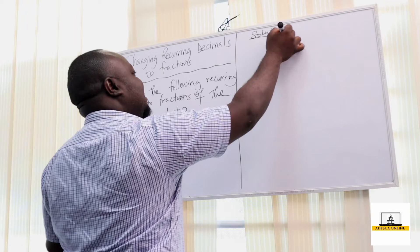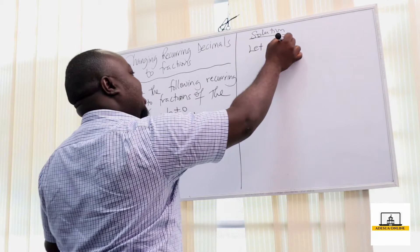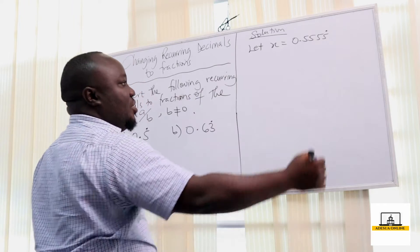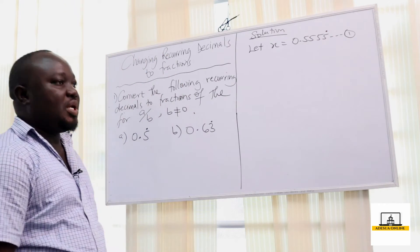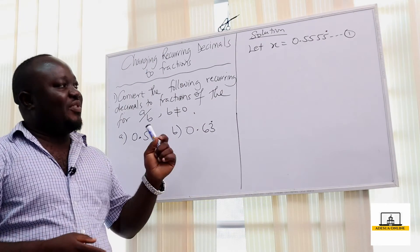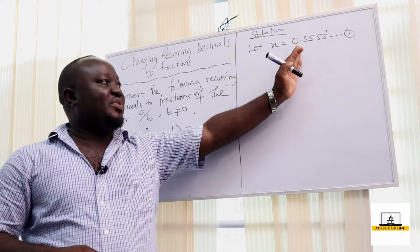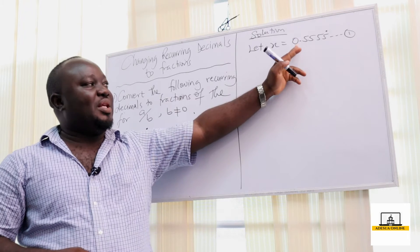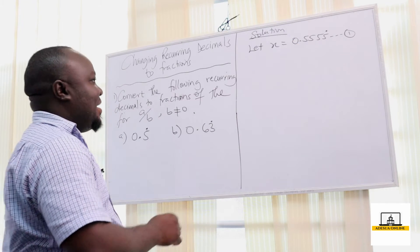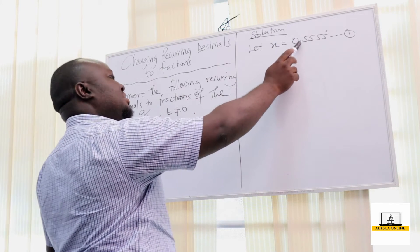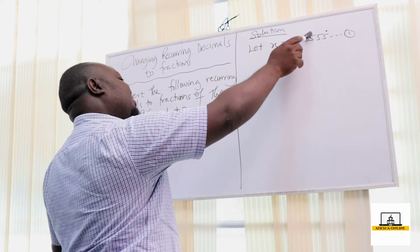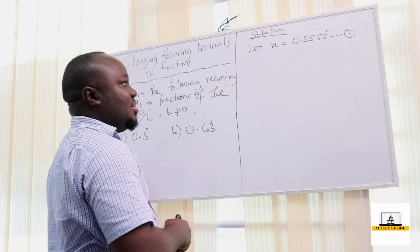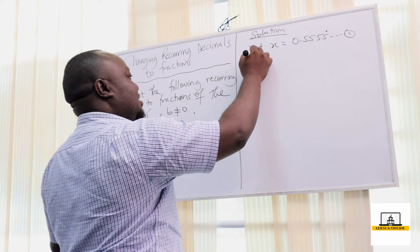First, we say: let x be equal to 0.5555... recurring. We call this equation 1. The whole idea is to get rid of the recurring decimal and change it to a whole number. To do that, I multiply by 10, which moves the decimal point one step to give 5.555... recurring.